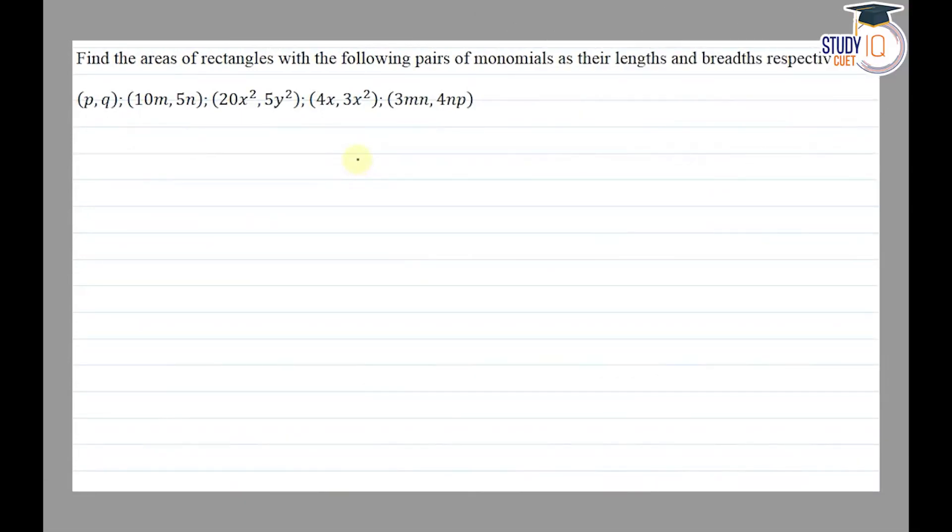Hello everyone, this question appears in class 8th NCERT chapter of algebraic expressions and identities. This is the second question of exercise 9.2. The question says find the areas of rectangles with the following pairs of monomials as their length and breadth respectively.